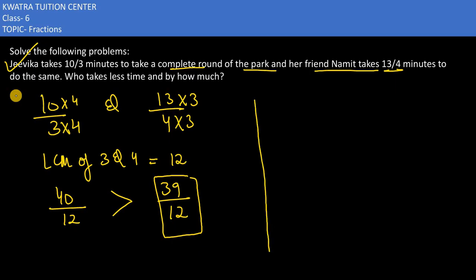Comparatively, between both of them what will be the answer? So we need to subtract the values. 40 by 12 minus 39 by 12. This would give you 1 by 12 minutes.